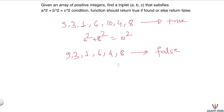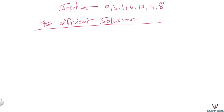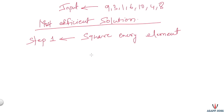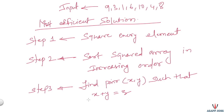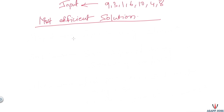Before going to the solution, we request you to pause the video and try to solve this problem yourself first. The most efficient solution has three steps. In step 1, we square every element of the input array. In step 2, we sort the squared array in increasing order. In step 3, we find a pair x, y such that x + y = z, where x is a², y is b², and z is c².